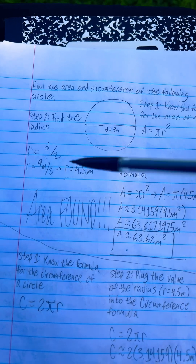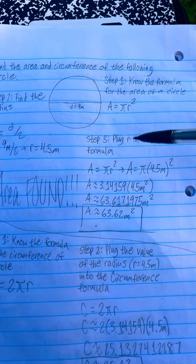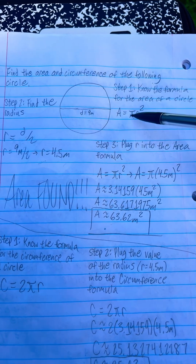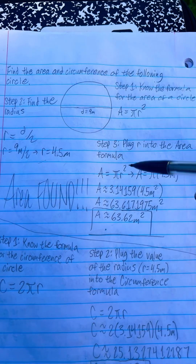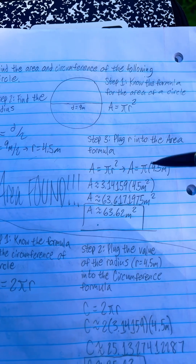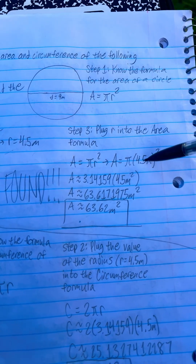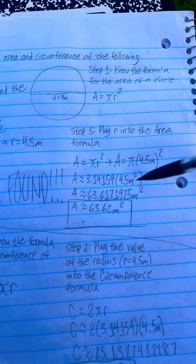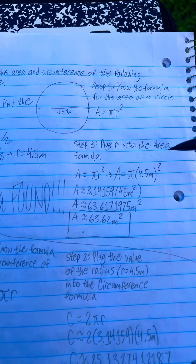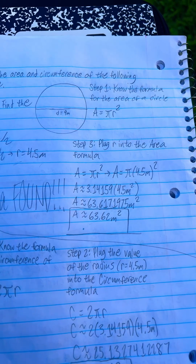Since the diameter is nine, the radius is 4.5 meters. Step three is to plug that radius into the area formula: pi is 3.14159, multiplied by the radius squared — 4.5 meters squared. I messed up right here, it's 4.5 meters squared. There is a difference between that.